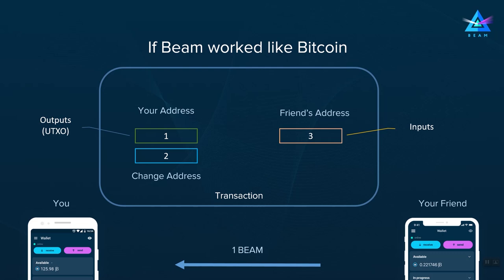The newly created outputs are usually called unspent transaction outputs, or UTXOs for short. All of this information needs to be recorded in the blockchain and is required to validate that the blockchain state is valid and that no coins were double-spent or created out of thin air. It is also important to note that in this case the addresses and the amounts are recorded in plain text and are visible to anyone.